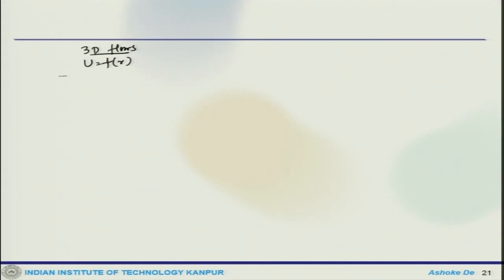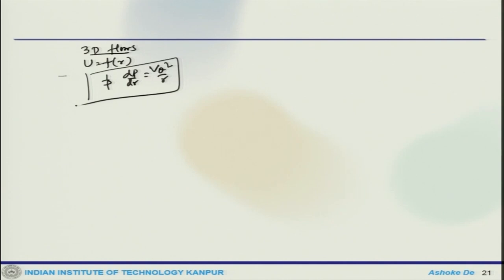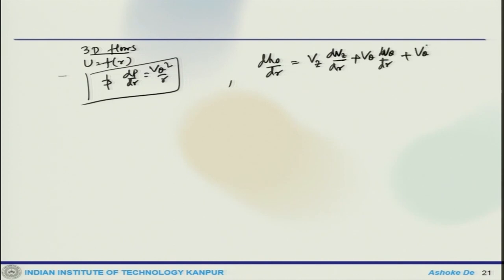The flow properties also vary with r, and the radial equilibrium condition has to be fulfilled, which is (1/ρ)(dp/dr) = v_theta² / r. We have already seen for the axial compressor the vortex flow equation: dh0/dr = vz * (dvz/dr) + v_theta * (dv_theta/dr) + v_theta² / r. This is the vortex flow equation we have seen previously.